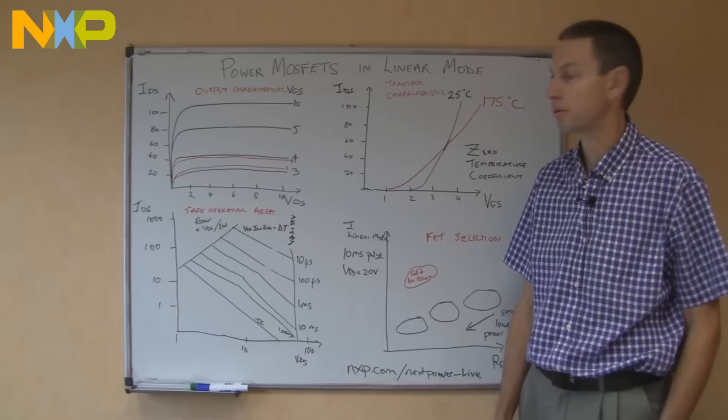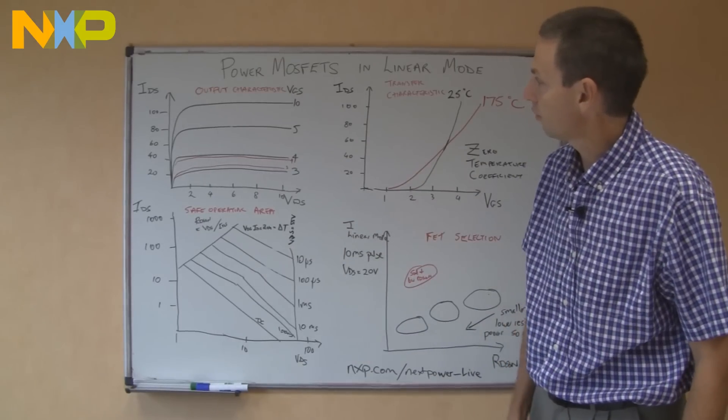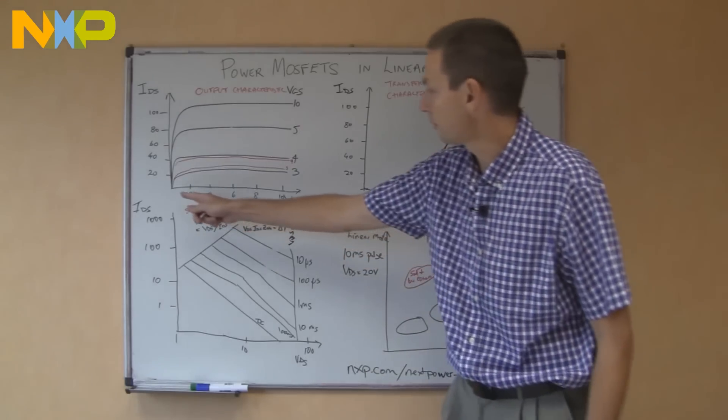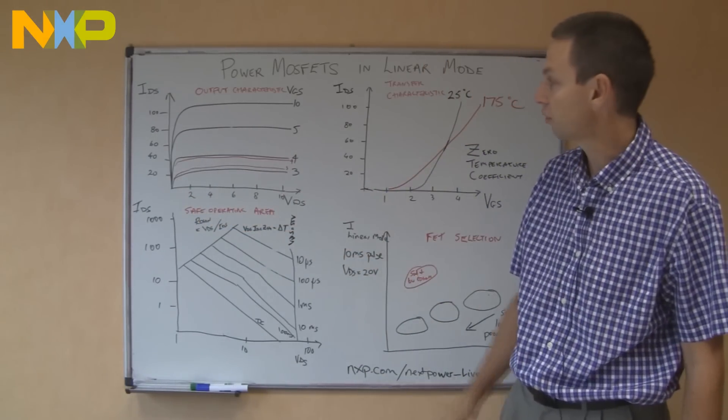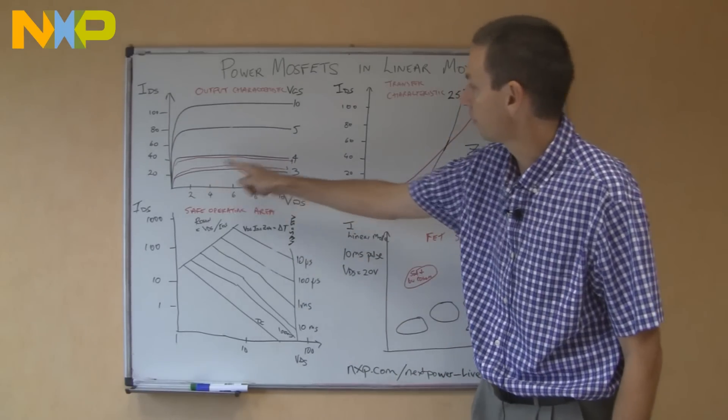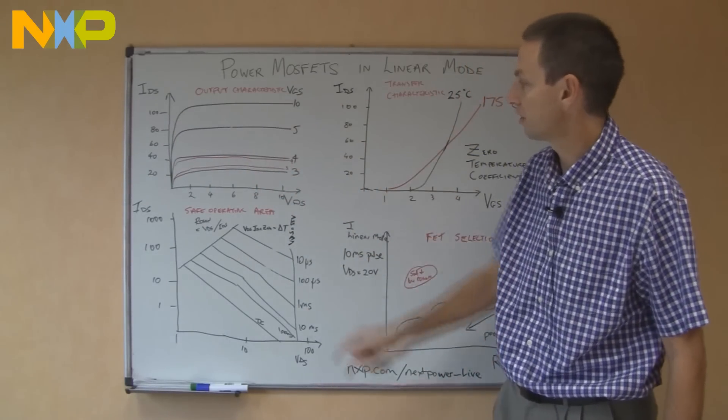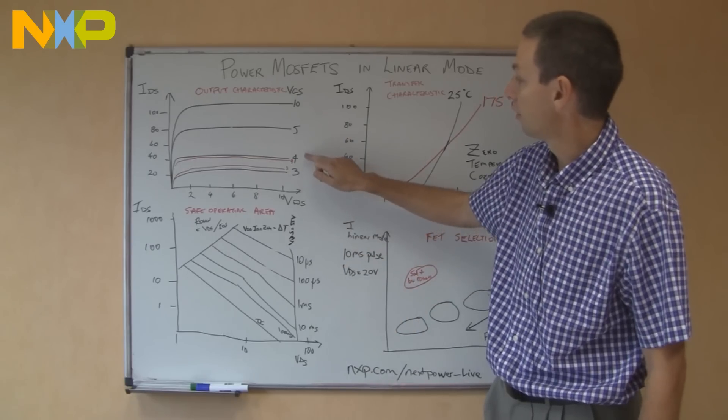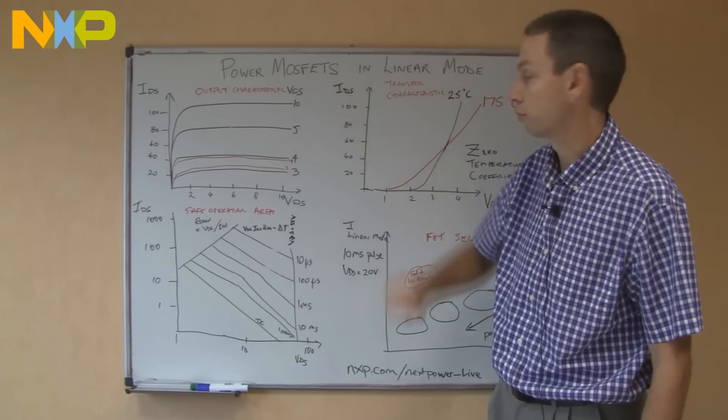So first of all, what is linear mode? In the top corner here we've got normal output characteristics for a power MOSFET. On the bottom axis, the x-axis, we've got the source drain voltage. On the y-axis we've got the source drain current, and plotted we've got various black curves - the current that comes out of the MOSFET with different gate biases. So I've plotted it here with 3V, 4V, 5V and 10V.